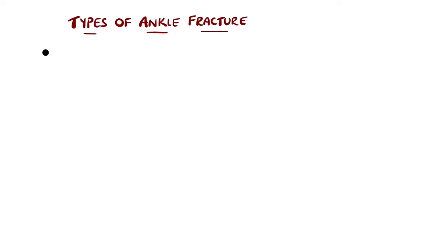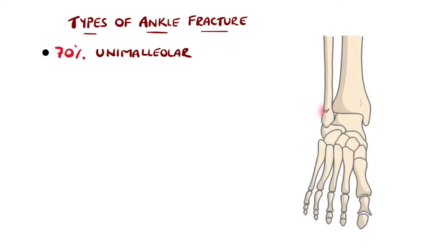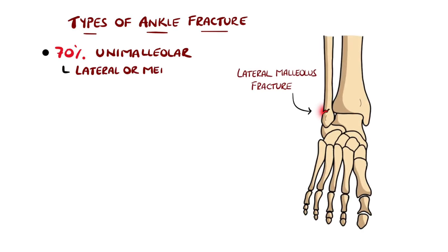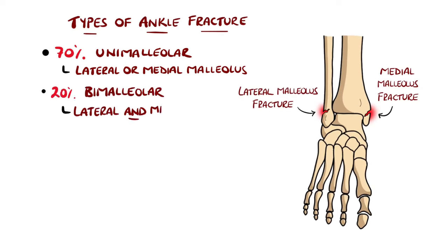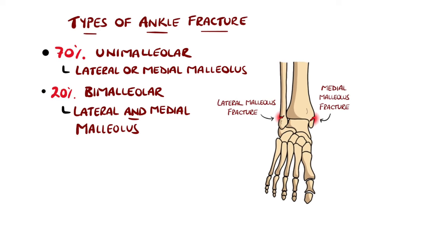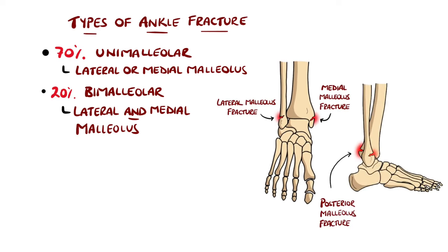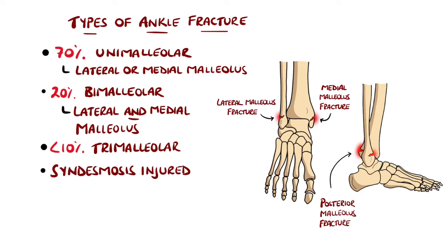In 70% of cases there is an isolated fracture of either the medial or lateral malleolus. If both are fractured, this is termed a bimalleolar fracture, seen in 20% of cases. If the posterior malleolus is also fractured, this is called a trimalleolar fracture, occurring in fewer than 10% of patients. In roughly 10% of cases the syndesmosis is also injured.